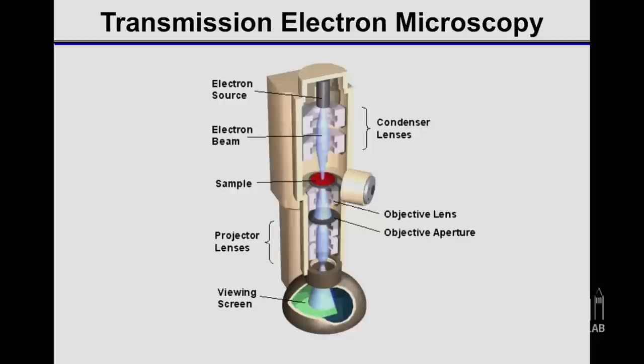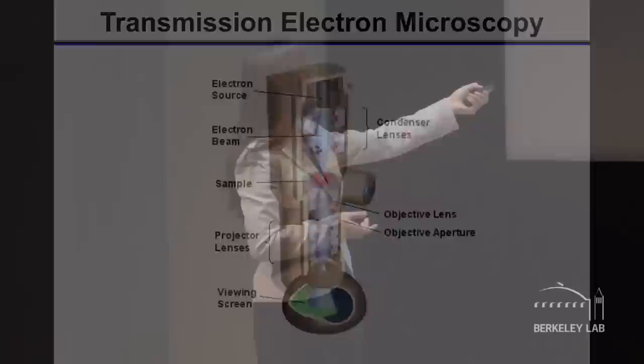A transmission electron microscope uses a high energy electron beam and focuses the beam using a series of magnetic lenses in high vacuum for imaging. As a comparison to a light microscope, the electron microscope has much better resolution to see small things — atoms — because the electron beam has very small wavelengths.